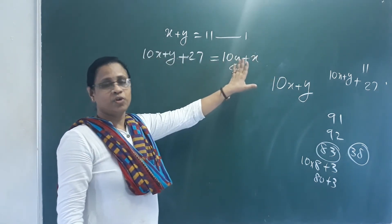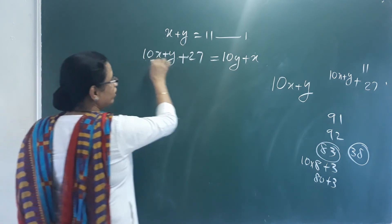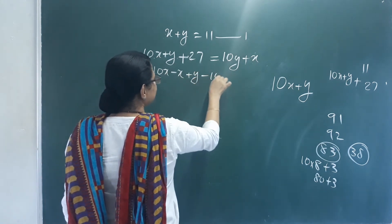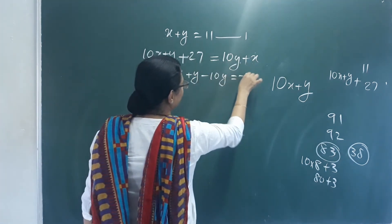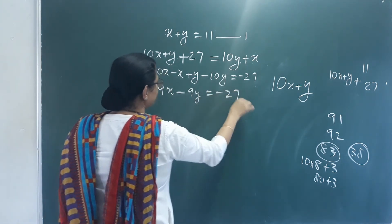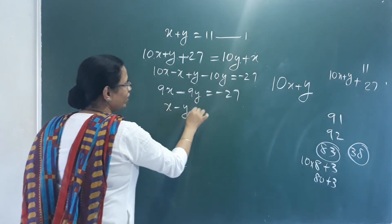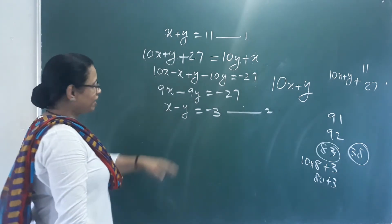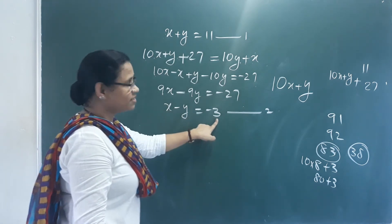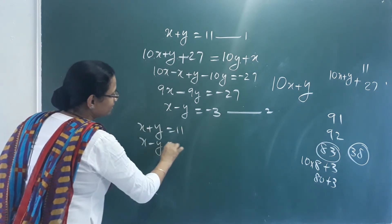Now we set up the second equation. The reversed number minus the original equals 27. That gives us (10y plus x) minus (10x plus y) equals 27, which simplifies to 9y minus 9x equals 27, or 9x minus 9y equals minus 27. Dividing by 9: x minus y equals minus 3. Now we have two equations: x plus y equals 11 and x minus y equals minus 3.